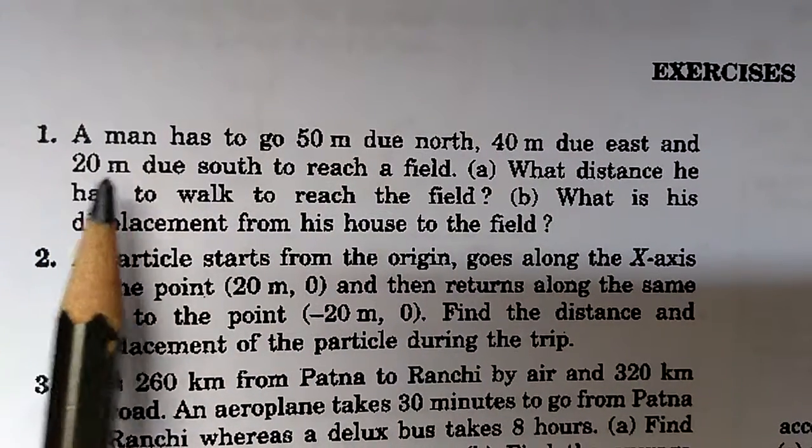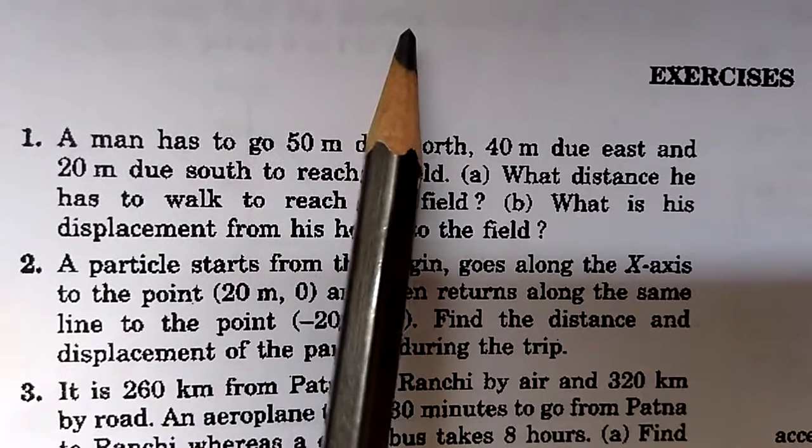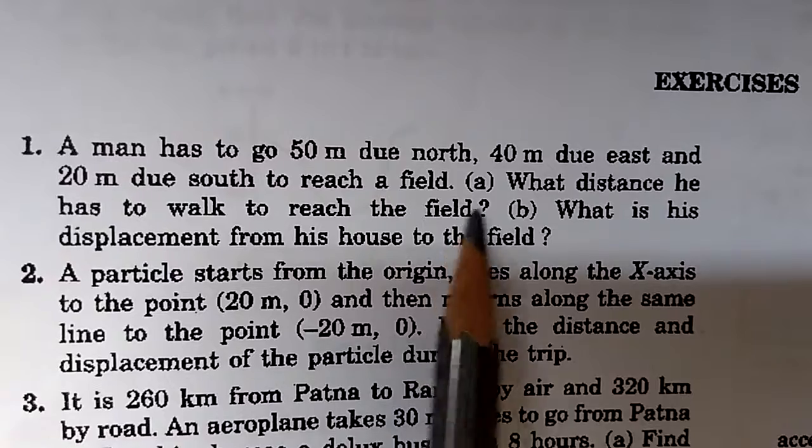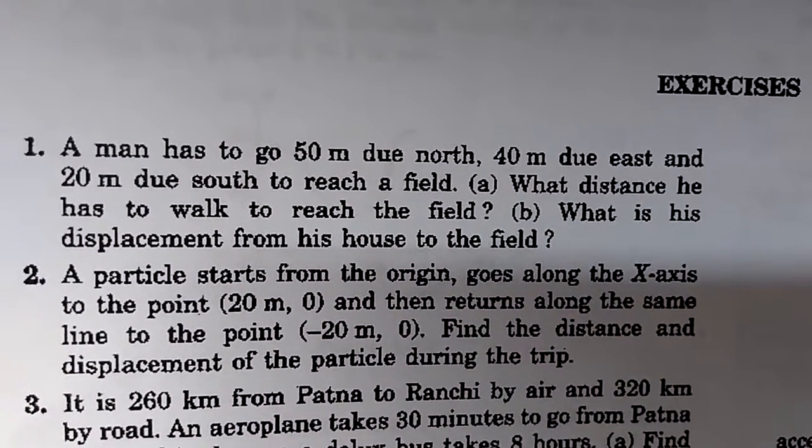Varma chapter 3, question number 1. A man has to go 50 meters due north, then 40 meters due east, and then 20 meters due south to reach a field. What distance has he has to walk to the field? And the second part is what is the displacement from his house to the field?